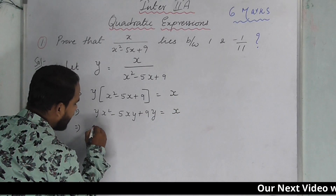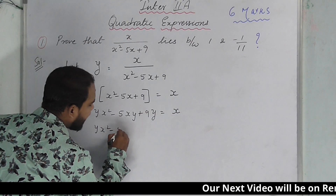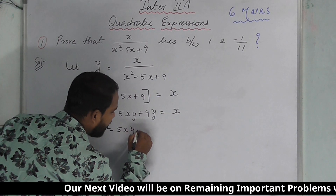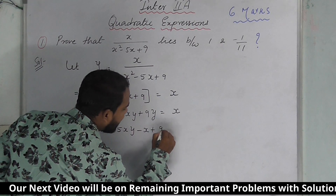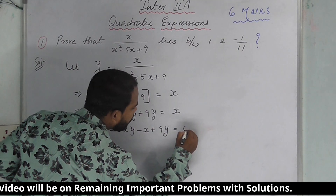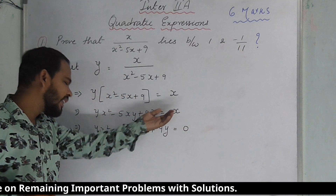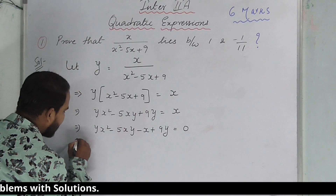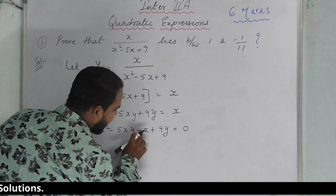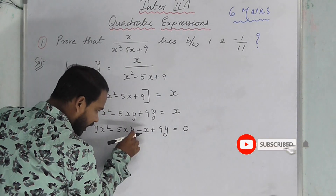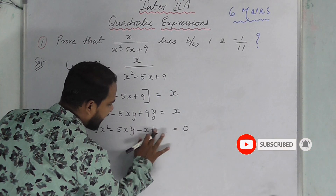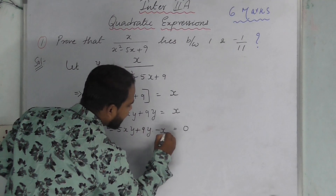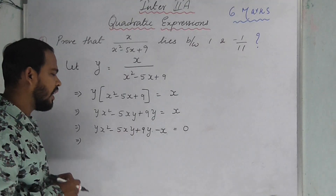Taking all terms to the left-hand side: yx squared minus 5xy minus x plus 9y equals 0. Rearranging: yx squared minus (5y plus 1)x plus 9y equals 0.